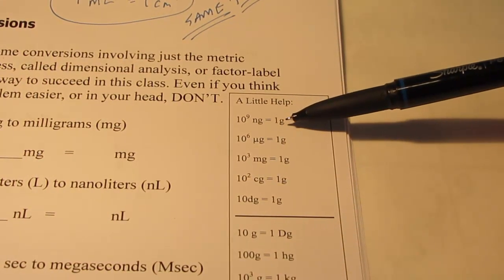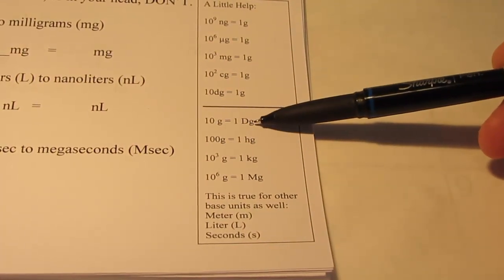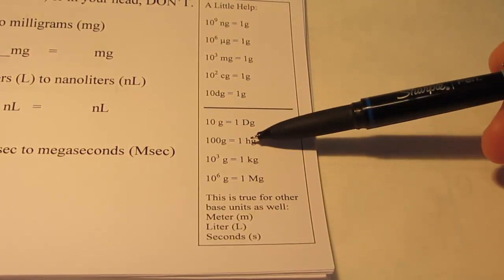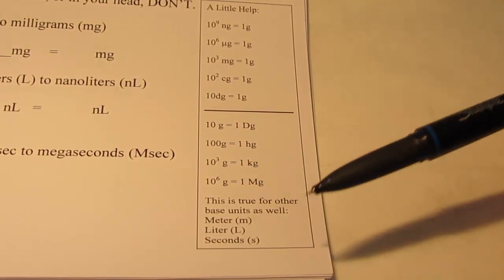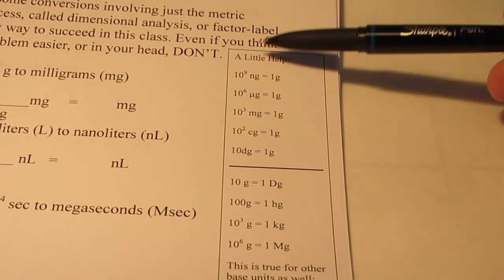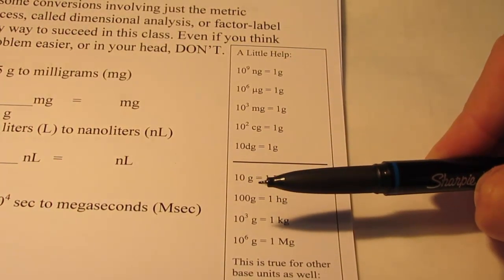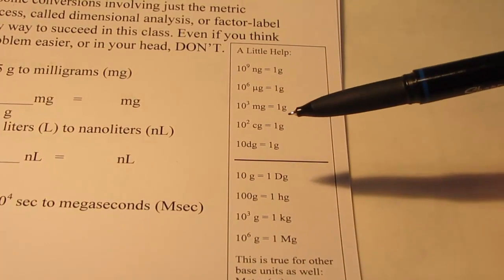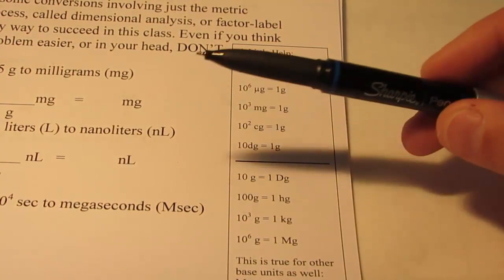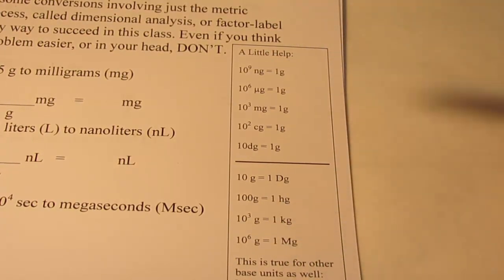Now I just said that for grams, but the same thing is true if I had used the base unit meter, liter, or second. So if I had one second there would be ten to the ninth nanoseconds. Then we have prefixes that mean something bigger than one. A decagram is the same as ten grams. A hectogram is a hundred grams. A kilogram is a thousand grams. And a megagram is ten to the sixth or a million grams. You'll be using this table quite a bit — it should be memorized very soon. The math is not hard; we are adding, subtracting, multiplying, and dividing. You have to put some effort into memorizing a few things, including the meaning of these prefixes.